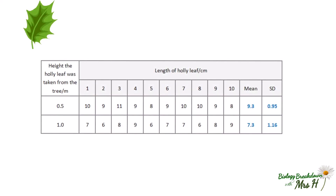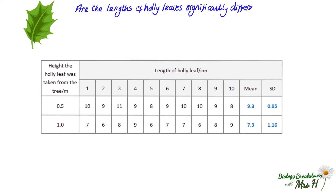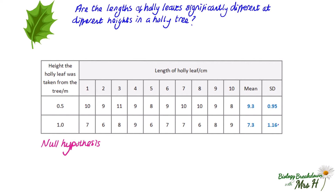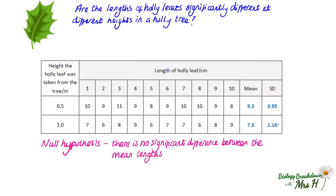Let's look at an example. Are the lengths of holly leaves significantly different at different heights in a holly tree? A student measured the lengths of 10 holly leaves at 0.5 metres high and 10 holly leaves at 1 metre high. Our null hypothesis is that there is no significant difference between the mean lengths of holly leaves at 0.5 metres and 1 metre. Because the leaves at each height are different leaves — two independent groups — we use the unpaired student's t-test.